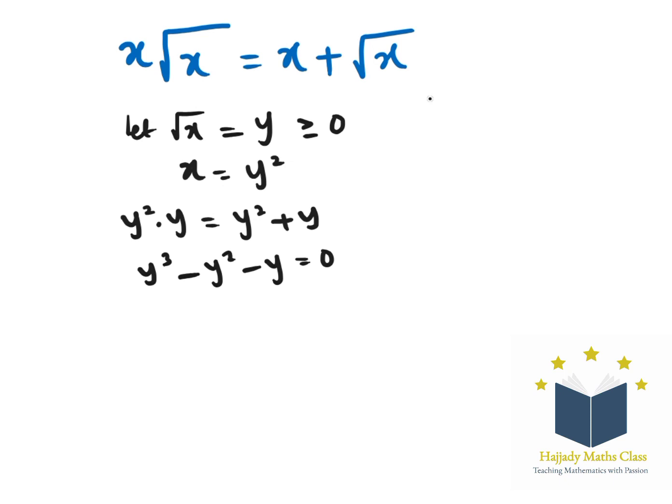Factoring out y, which is common to all, I have y times (y² minus y minus 1) equals zero. So here I'm having something like a quadratic equation in the parentheses.